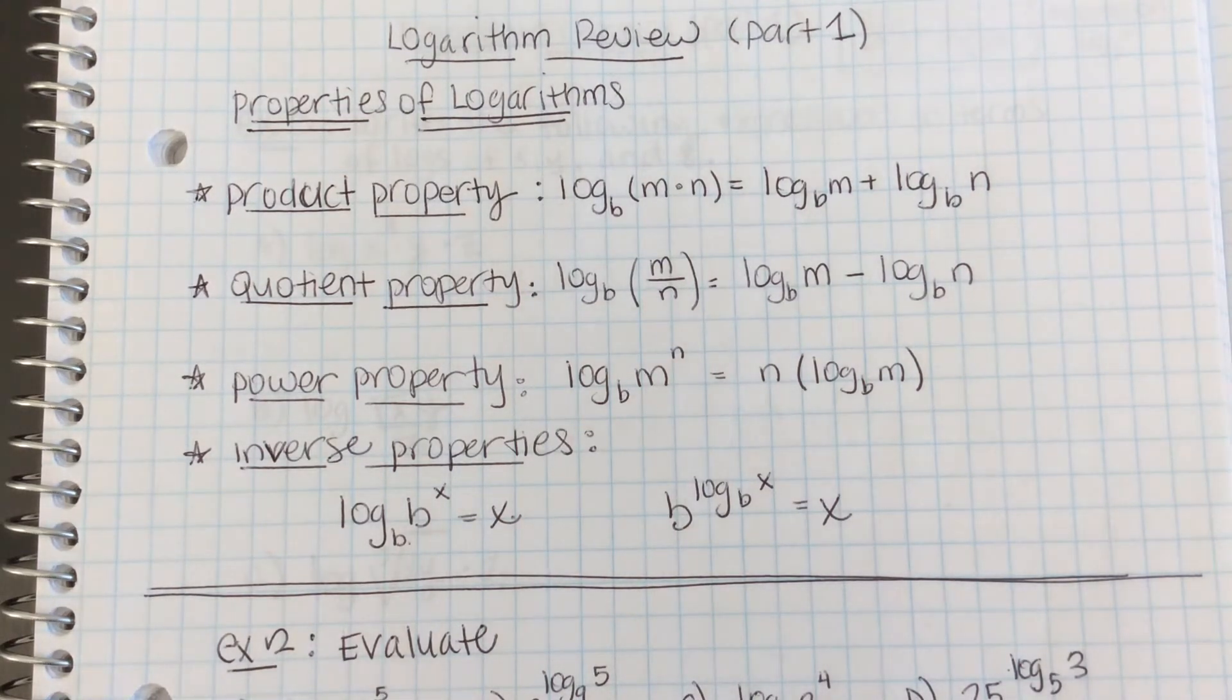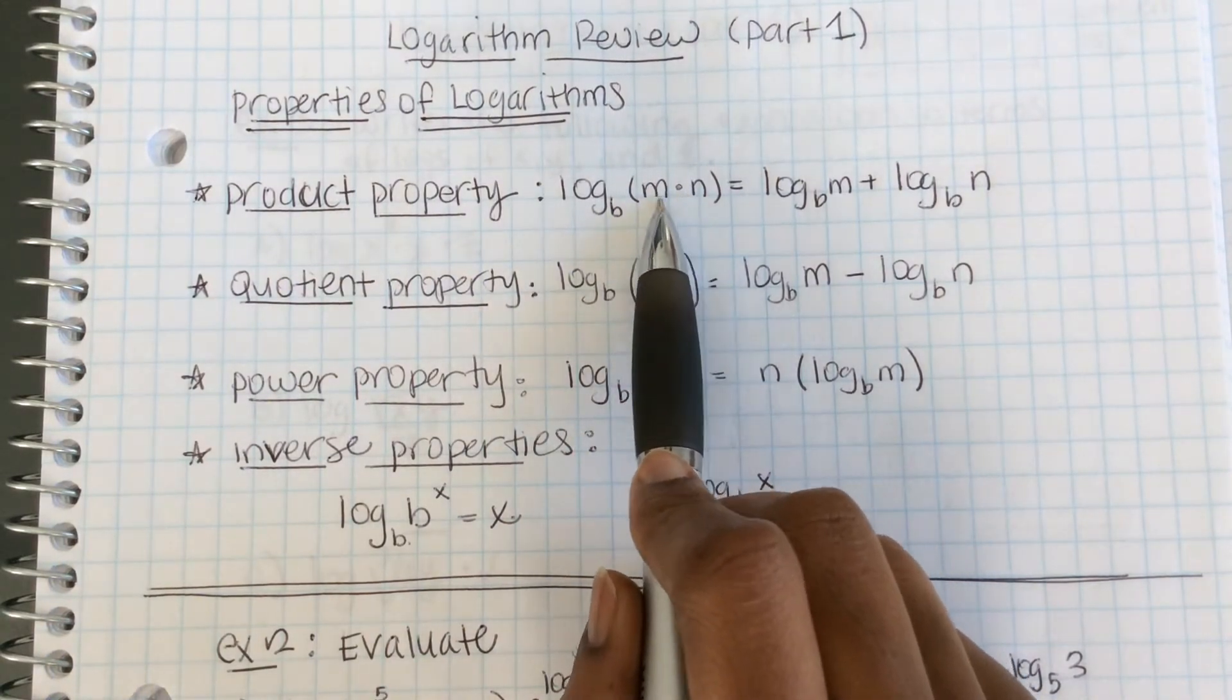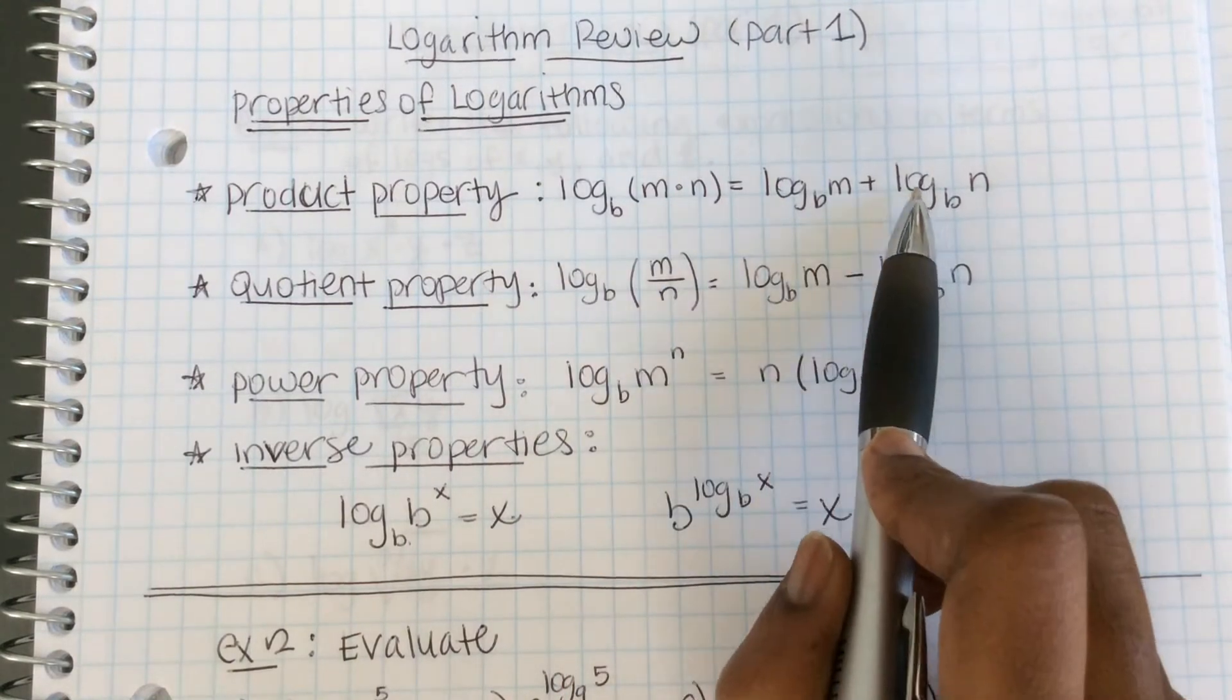Hey guys, copy the properties of logarithms listed below. The properties are pretty easy to remember if you connect them to the properties of exponents. When you're multiplying two numbers with the same base, you can add their exponents.